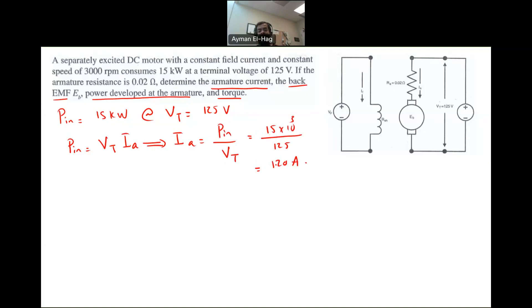And this will give me a total current equal to 120 amp. So this is my armature current.